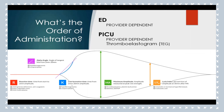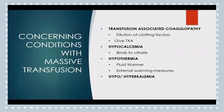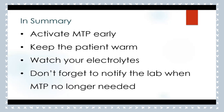Avoid hypothermia by giving blood products through a fluid warmer and applying external warming measures. Also watch for hypo or hyperkalemia by monitoring electrolytes. In summary: activate MTP early, keep your patient warm, do not activate the triad of death, watch electrolytes, and do not forget to notify the lab when MTP is no longer needed.